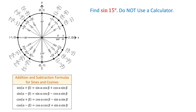The unit circle usually has a total of 16 angles. Each angle corresponds to a point on the unit circle, and the first coordinate represents the cosine of this angle and the second coordinate represents sine. For example, cosine of 30 degrees is square root of 3 over 2 and sine of 30 degrees is 1 half.